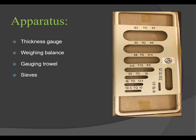The required apparatus includes a thickness gauge — also called a Flakiness Index gauge — a weighing balance machine, a trowel, and different sieve sizes. On the thickness gauge plate there are different sized slots, all dimensions in millimeters: 63–50, 50–40, 40–31.5, 31.5–25, 25–20, 20–16, 16–12.5, 12.5–10, and 10–6.3 mm.